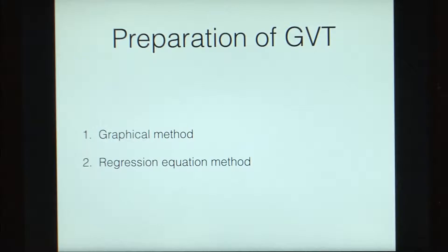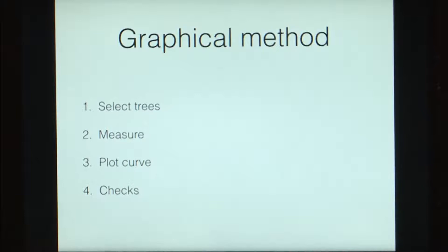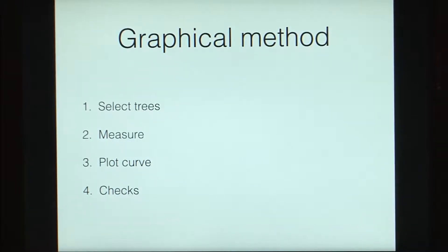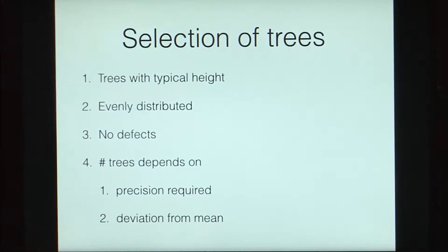This table can be generated by the graphical method or the regression equation method. In the graphical method, we start by selecting trees — we need to find out the generalized typical trees, not every tree. Once we have selected and felled those trees, we take measurements, plot the curves, use a number of checks and balances, and then get a table out of it.